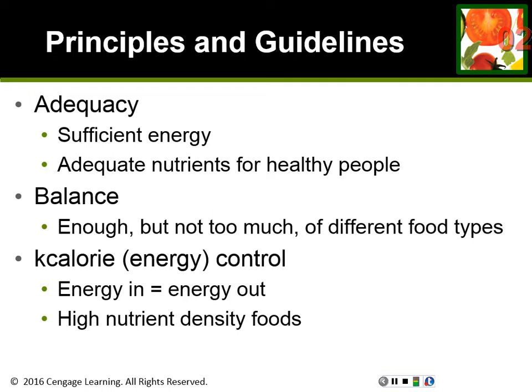Balance means you're getting enough, but not too much, of all the different food types — in regards to both nutrients and foods. As we saw with the apple and chicken example, each food provides you something different. You don't want to eat just the same foods over and over, or you'll be neglecting some nutrients that other foods provide. In a balanced diet, foods rich in different nutrients are included so you're balancing your food intake to get all the nutrients you need.